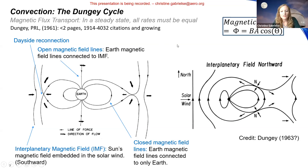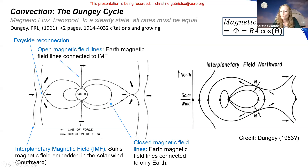When the solar wind is pointing northward, you can still have a cycle of convection. You can't have dayside reconnection at the nose because field lines point the same direction, but as the solar wind field line gets draped back into the tail, it can reconnect where it points opposite to Earth's field. You still get convection, but these cause very different patterns in how the magnetosphere-ionosphere looks.